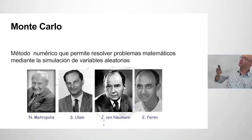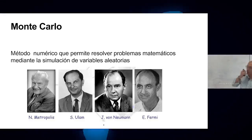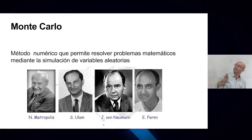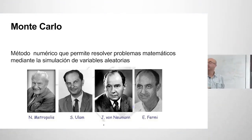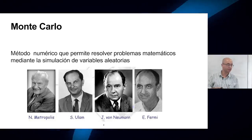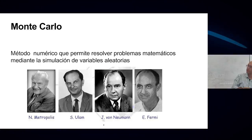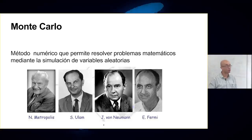Next comes Monte Carlo. The term Monte Carlo refers to a numerical method that solves mathematical problems by sampling or simulating random variables. The key figures behind this method are Metropolis, famous for the Metropolis algorithm, Ulam — who was from Poland — von Neumann, and Fermi, who reportedly developed the Monte Carlo method independently on his own.